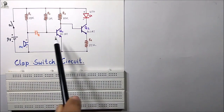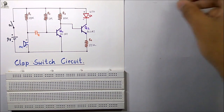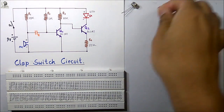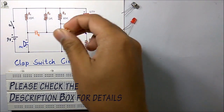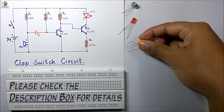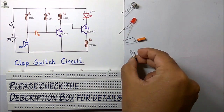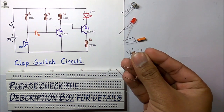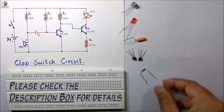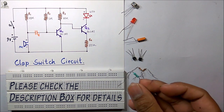To implement this circuit on this Vero board we will require some components. The components are: a DC mic, an LED, a 2.2 microfarad capacitor, 2 BC547 transistors which are NPN transistors, and 2 10k ohm resistors.